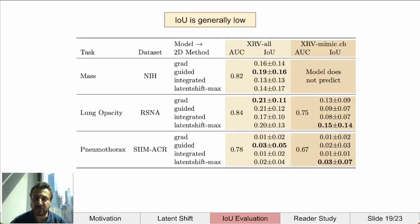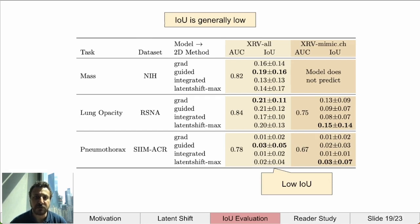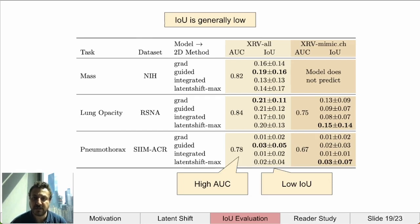Here is a subset of the experiments we performed, showing multiple explanation methods applied to two different models. Overall, IOU is low while AUC scores are relatively high. The most extreme case is with pneumothorax. A radiologist on the team noted that low pneumothorax performance makes sense because the resolution of the images used was only 224×224, which does not show enough detail to see the small signatures of a collapsed lung.